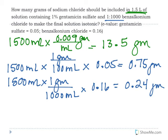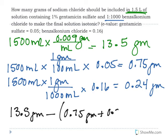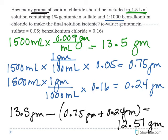Step three is the same: subtract the step two answers from step one. We need 13.5 grams total, but benzalkonium and gentamicin together replace 0.75 + 0.24 = 0.99 grams. So 13.5 − 0.99 = 12.51 grams of sodium chloride is needed. Since the answer is requested in grams, no further conversion is necessary.